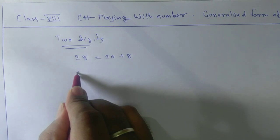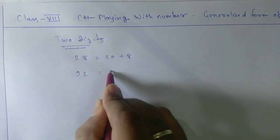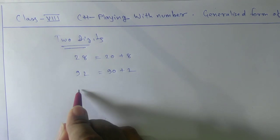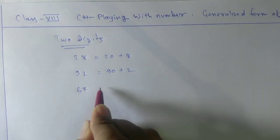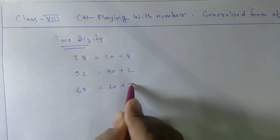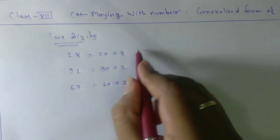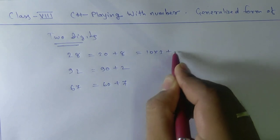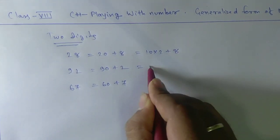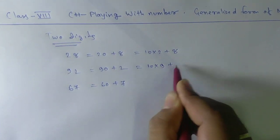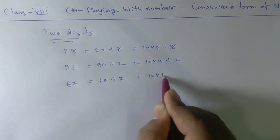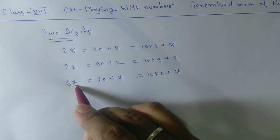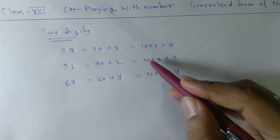If we take 92, this can be written as 90 plus 2. If we take 67, this can be written as 60 plus 7. Rewriting these: 10×2+8, 10×9+2, and 10×6+7. You can see that 10 is common in each two-digit number.